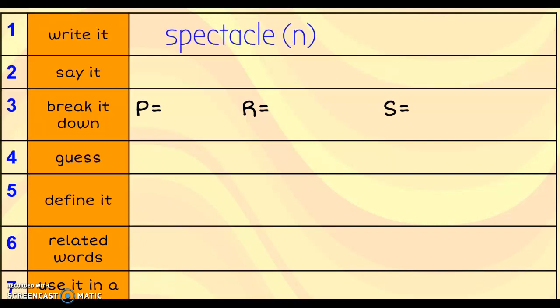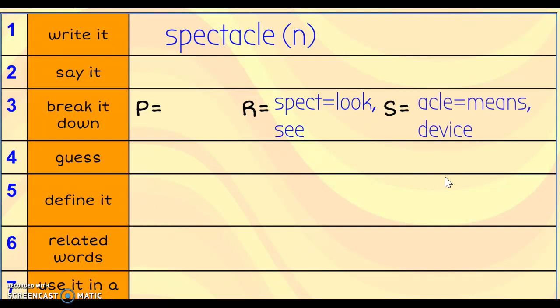So your first word with me is spectacle, and these next two words are going to sound very similar. So spectacle is a noun. Notice there's no S. A spectacle. The root in there, of course, is spect, which means look or see. And then our suffix, A-C-L-E, means or a device. A means is like a way of getting something done, the means to an end, how you achieve something through maybe a device.